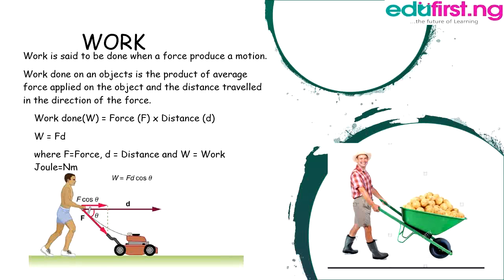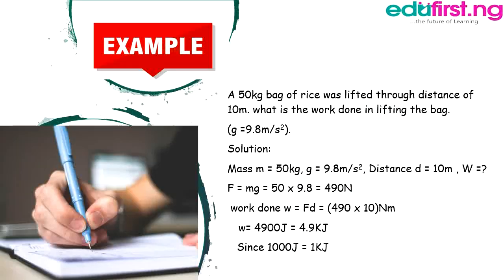Example: A 50 kg bag of rice was lifted through a distance of 10 meters. What is the work done in lifting the bag, given that g equals 9.8 meters per second squared? Whenever you are asked to solve a problem like this, first itemize what you are given: mass M equals 50 kg, g equals 9.8 m/s², distance equals 10 meters.